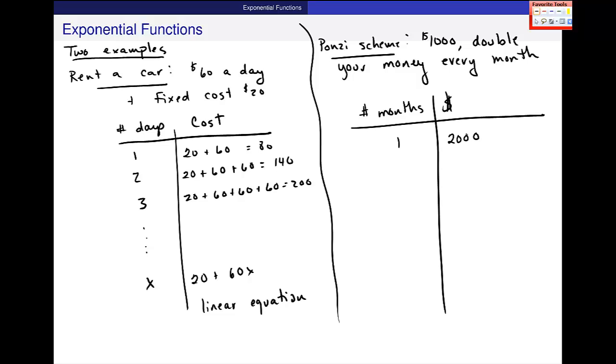Double your thousand. After two months, he's supposed to give you $4,000. After three months, he's supposed to give you $8,000. Does that make sense? Four months, $16,000. And five months, $32,000.